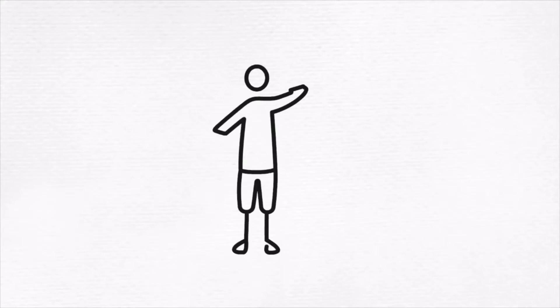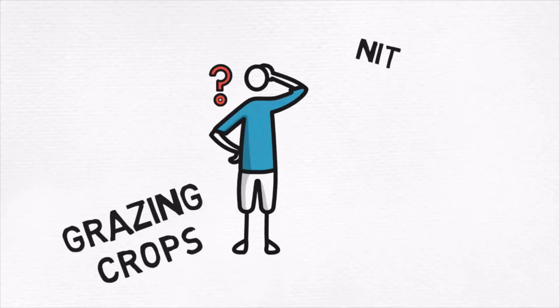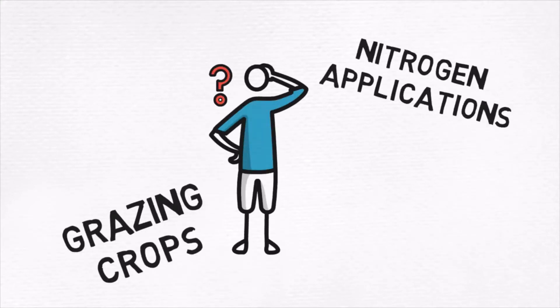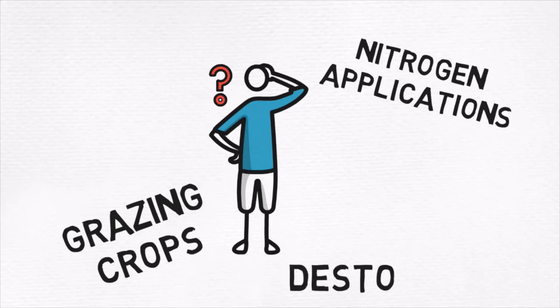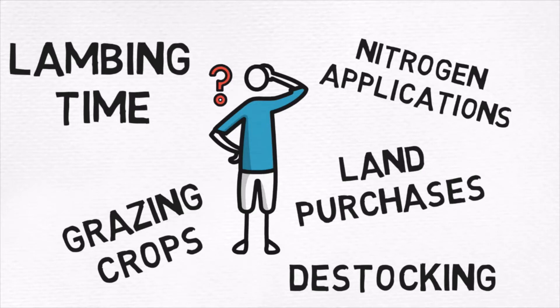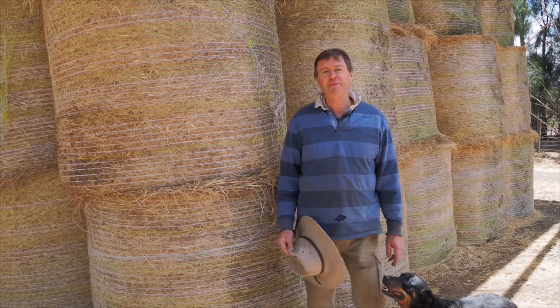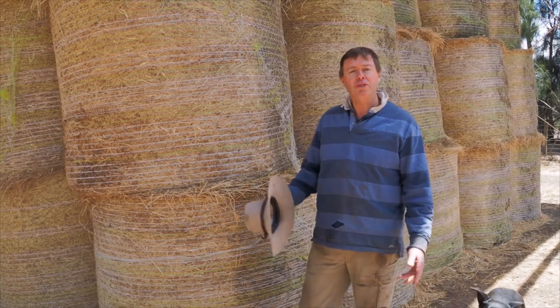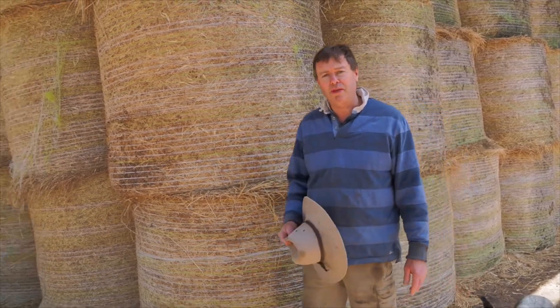I've got a folder full of them — decisions as simple as do I graze this crop or apply nitrogen, to more complex ones such as destocking, changing lambing times, or even selling or buying land. The example I'm going to take you through is one that's common to a lot of livestock producers, and that's around selling stock.